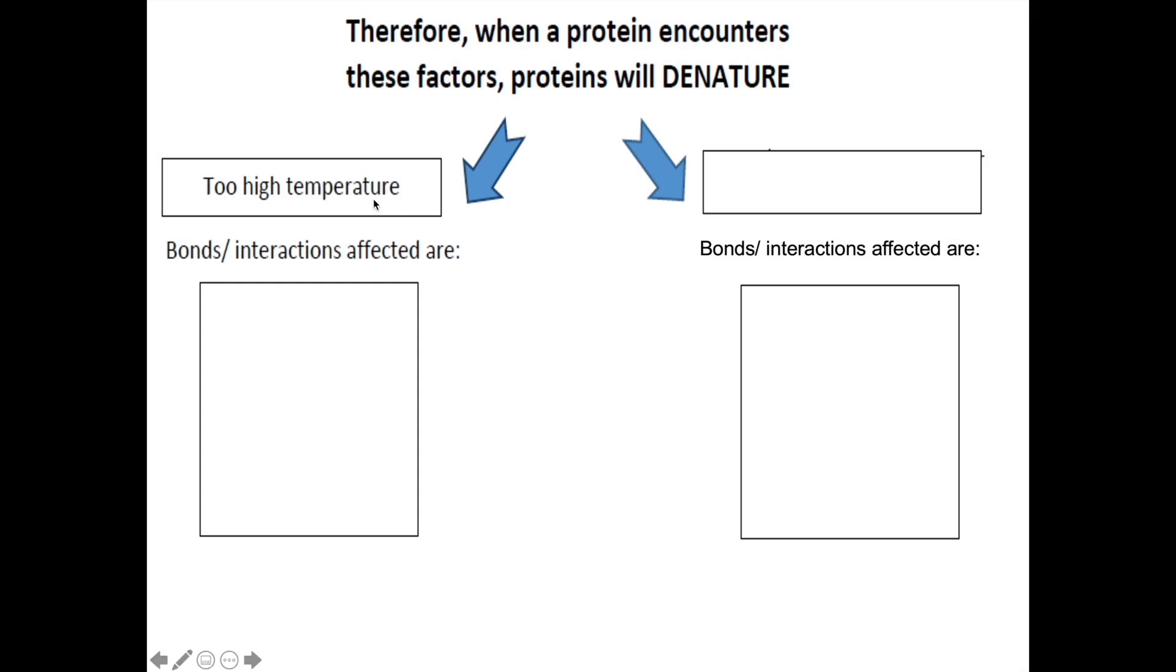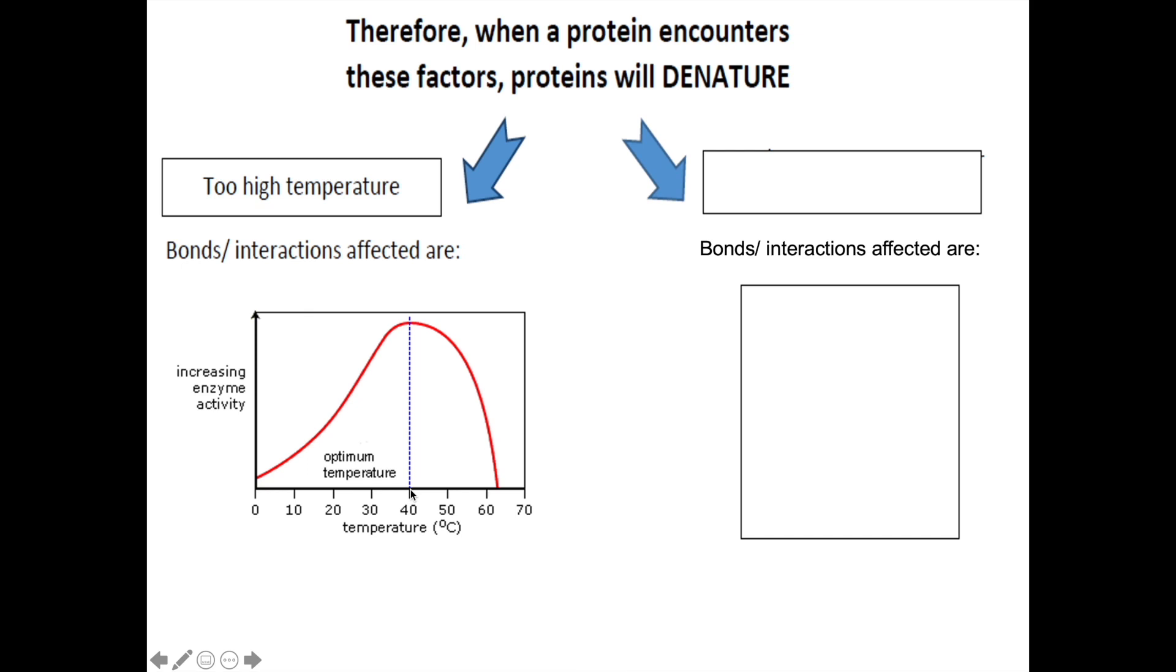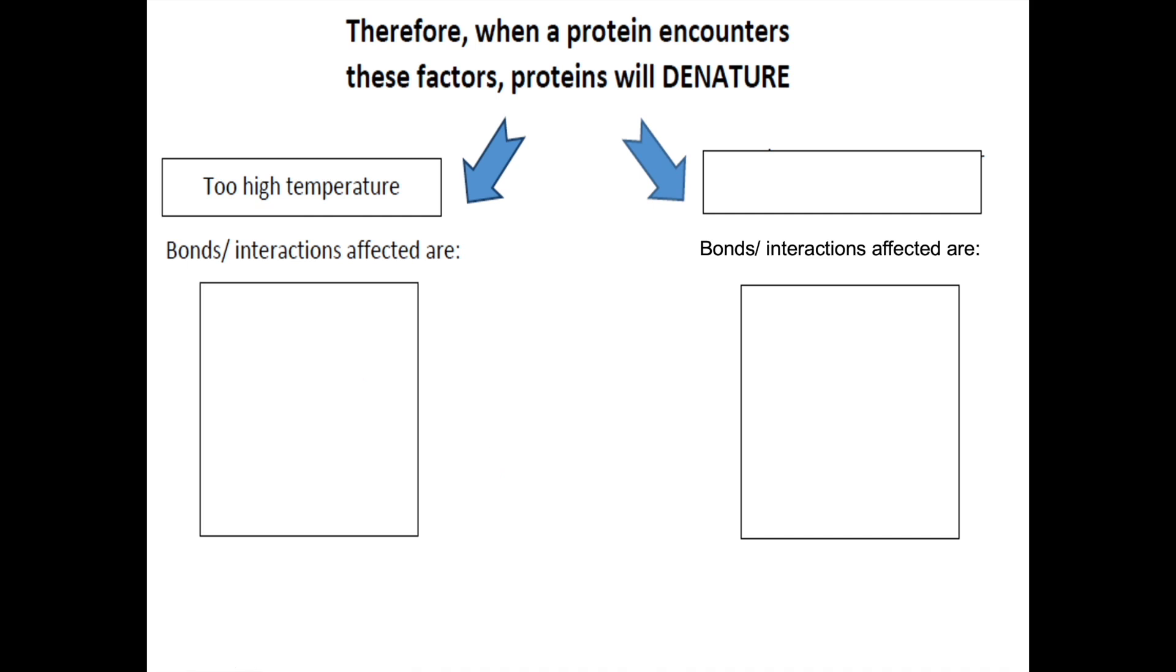The first one is too high temperature. From what we have learned during secondary school, we know that beyond the optimum temperature, increasing the temperature will no longer increase enzyme activity. This is because when the temperature is too high, it will cause all the bonds - hydrogen bond, ionic bond, disulfide bridge, hydrophobic interaction, and van der Waals interaction - that's holding the protein in its shape, to be broken down. This causes the protein to denature. Substrate can no longer bind into its active site, so that's why you see the rate of reaction for the enzyme falls down dramatically.